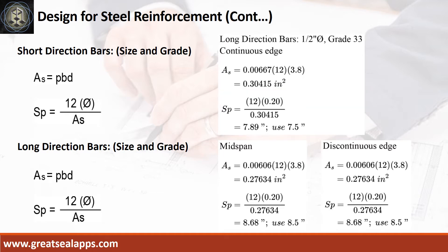At long direction: given continuous edge ROE equals 0.00667, b equals 12 inches, d equals 3.8 inches, area of steel is 0.30415 square inches, and spacing for half-inch diameter bar is 7.5 inches. Given mid-span and discontinuous edge ROE equals 0.00606, b equals 12 inches, d equals 3.8 inches, area of steel for both is 0.27634 square inches, and spacing is 8.5 inches.